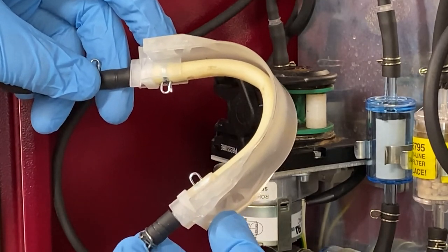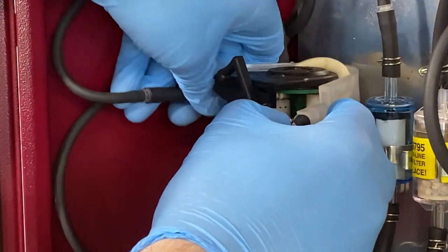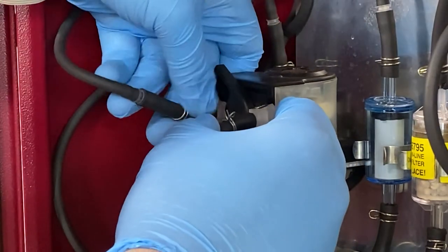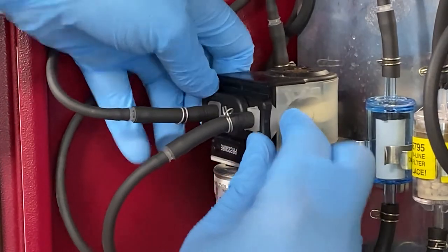Lastly, wrap the new condensate pump tube and the plastic covering around the condensate pump and close the N-shaped clip.